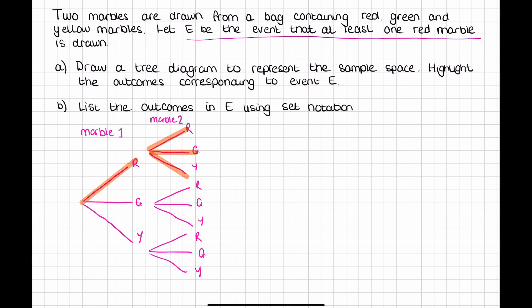Now if marble one wasn't a red, so we started with a green, to have this event E occurring we can only have the red marble for the second one. And the same with the yellow. So if we started with a yellow marble to still have at least a red, we would then need a red after the yellow is drawn.